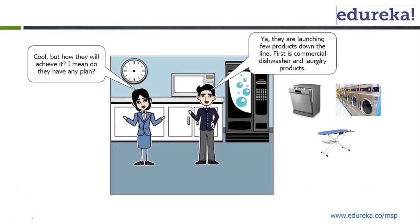She says, okay cool, but how will they achieve it? I mean, do they have any plan? So that's what we asked, right? This is the interesting generation. He says they are launching a few products down the line. First is commercial dishwasher and laundry products. So he listed those products that will increase or double the revenue by 2015.